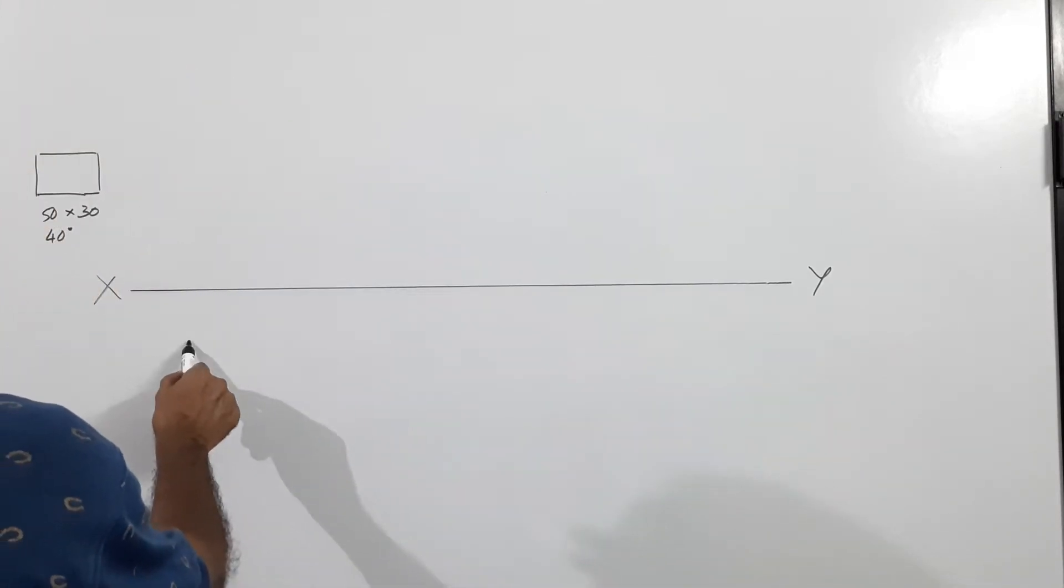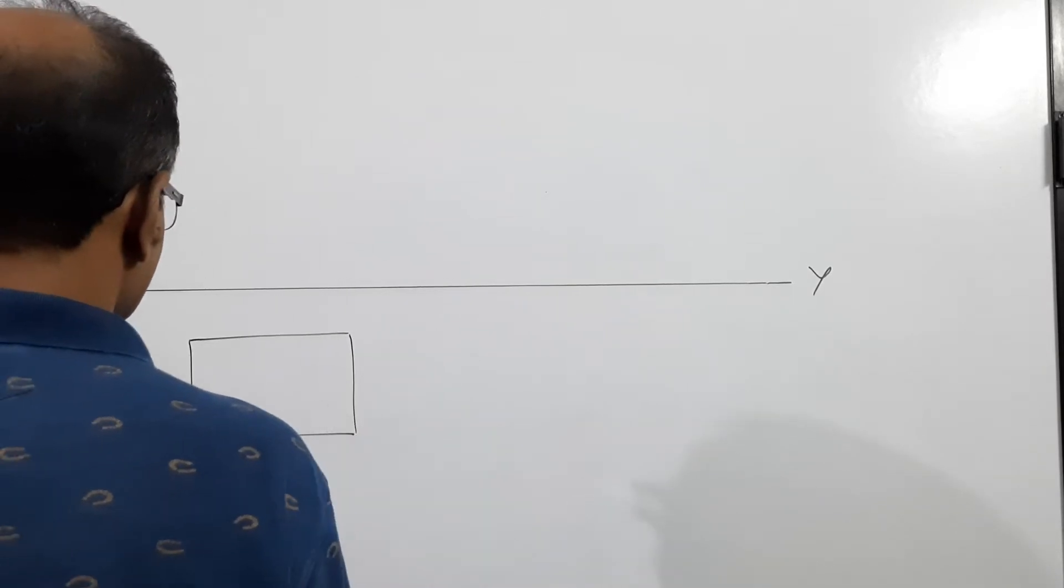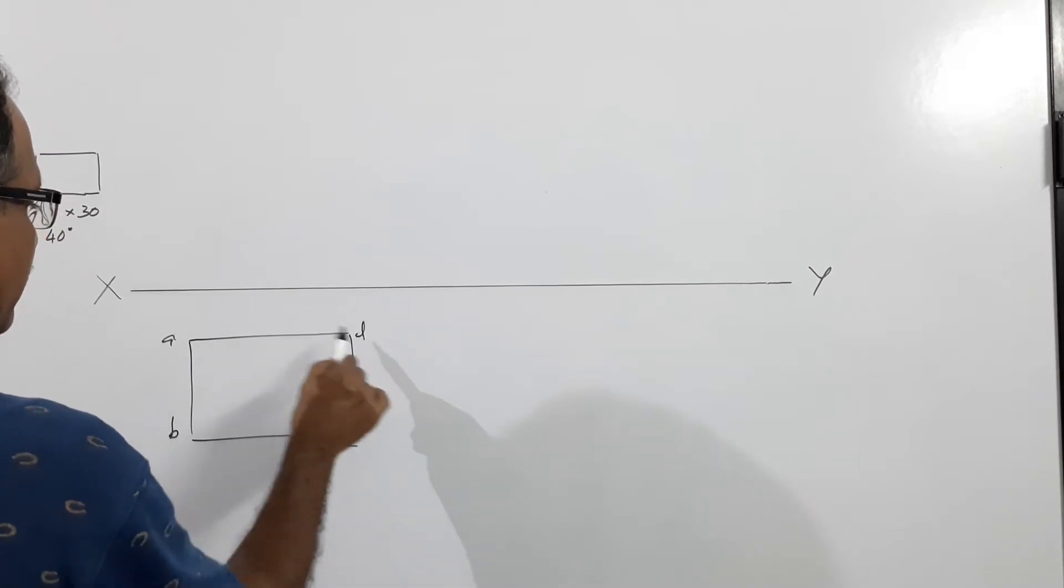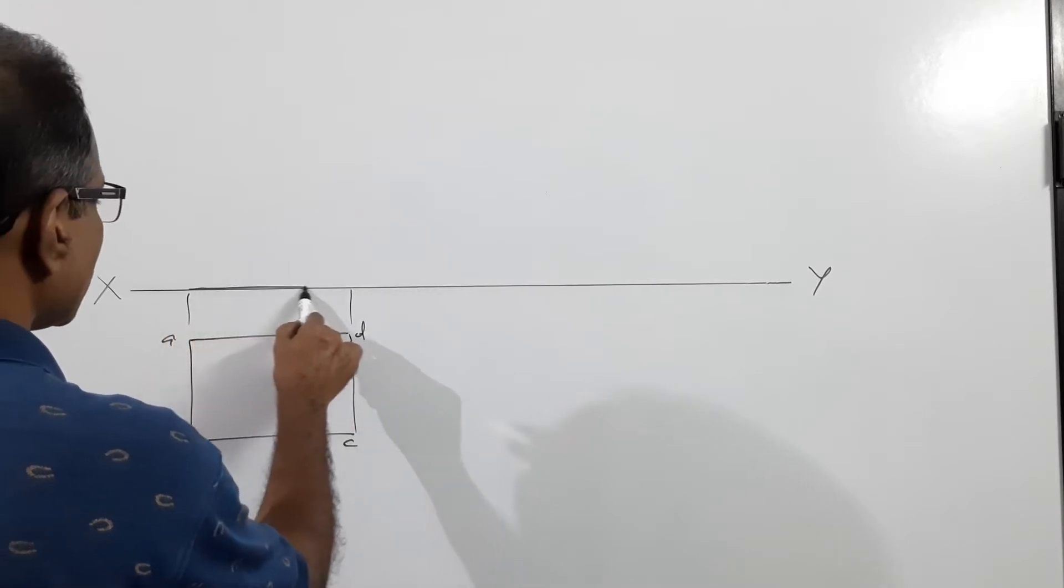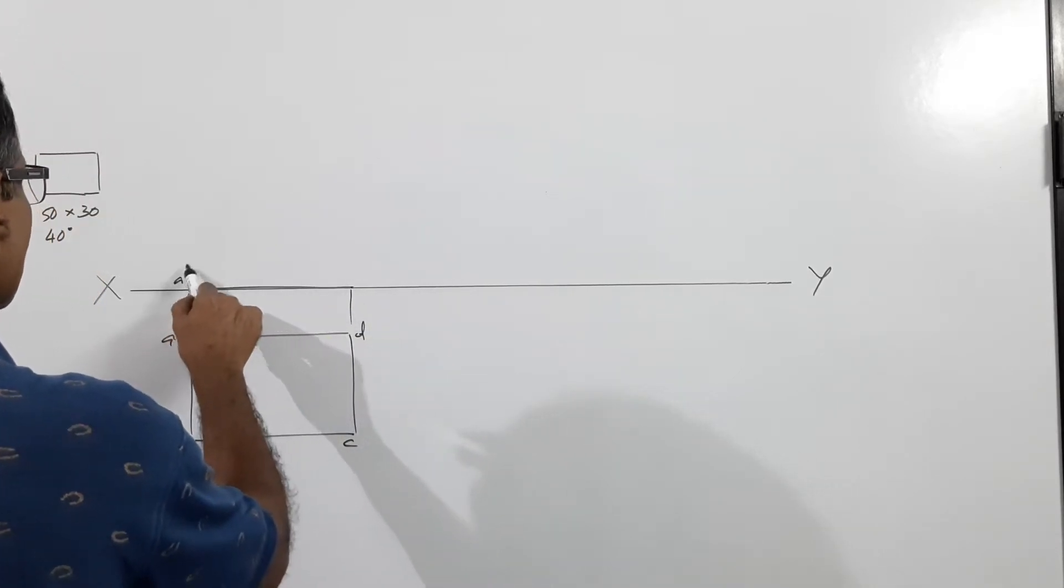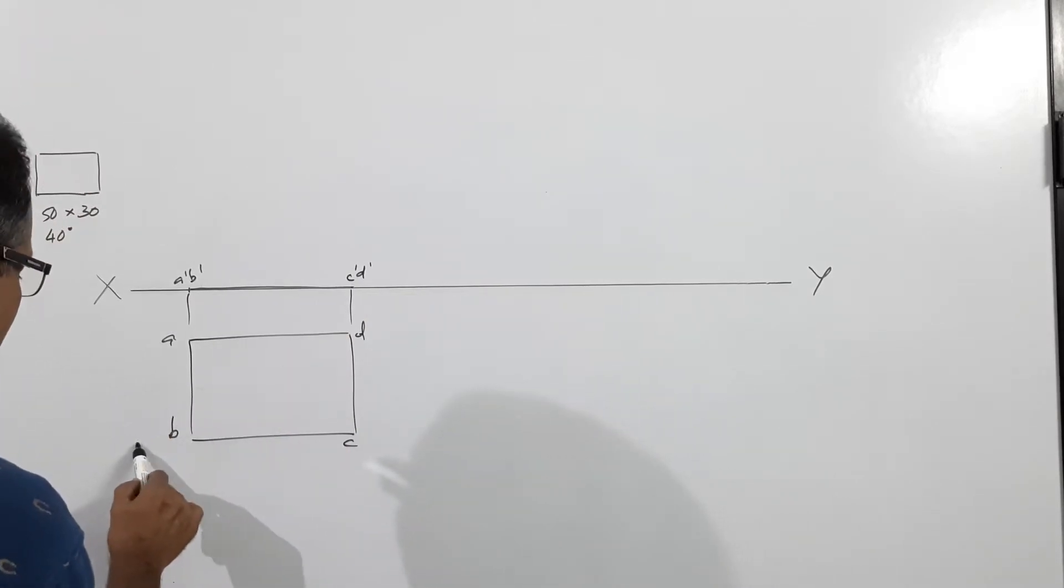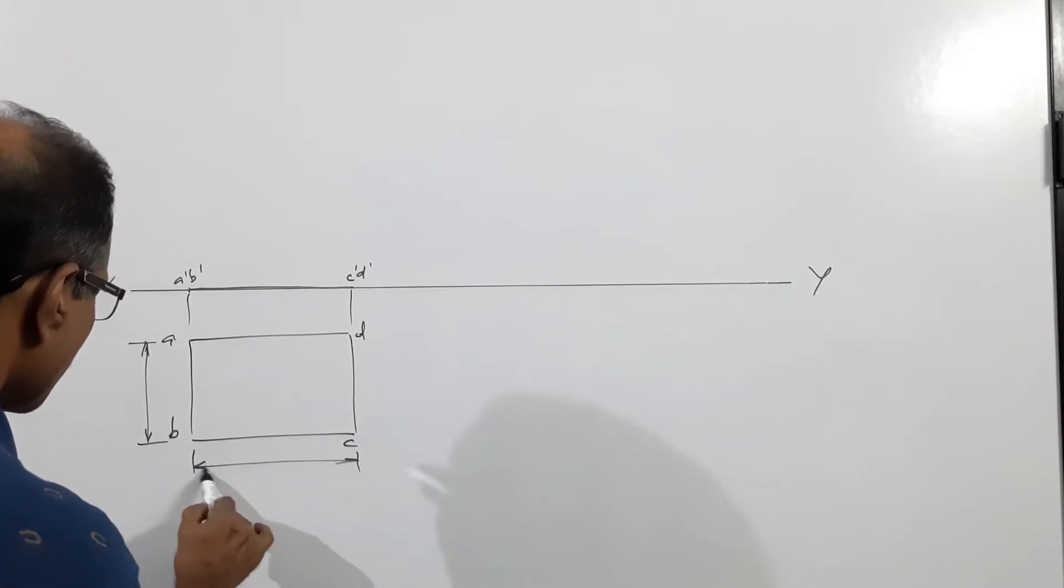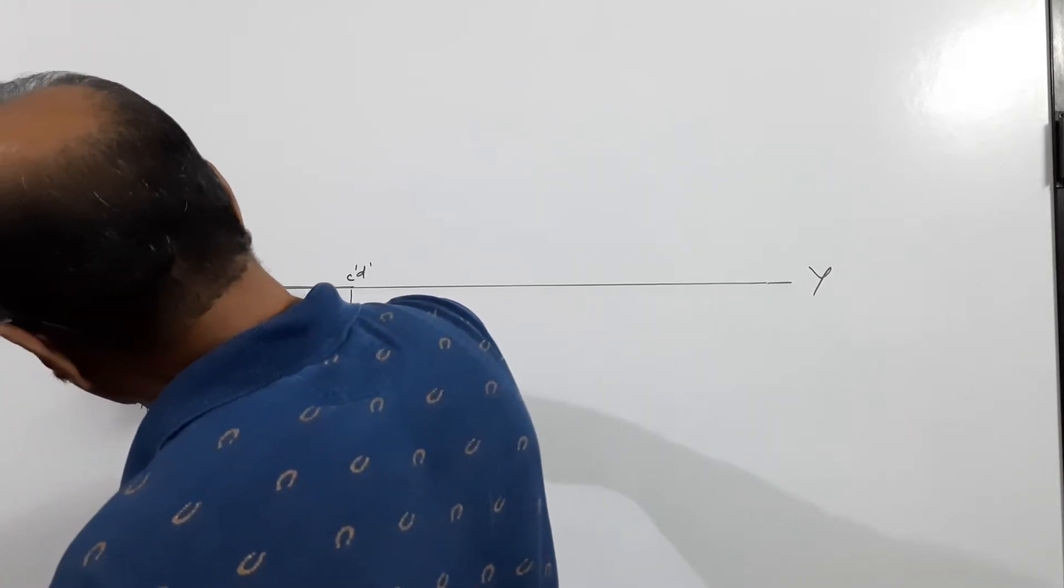This is the simple position. ABCD. What's the elevation? I am keeping the lamina lying on HP so that the elevation is aligned on HP. A dash B dash C dash D dash. This is 30 mm, this is 50 mm.